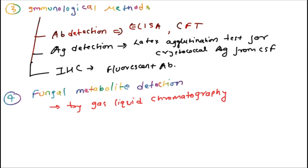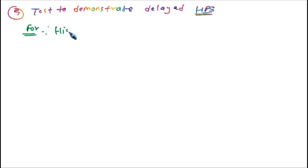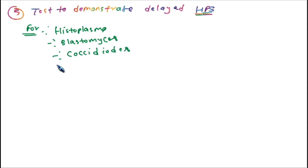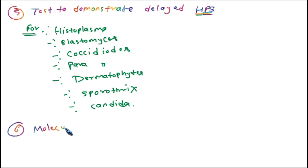The fifth immunological method is a test to demonstrate delayed hypersensitivity — used for Histoplasma, Blastomyces, Coccidioides, Paracoccidioides, dermatophytes, Sporothrix, and Candida. The sixth and final method in lab findings is molecular method — the most important being PCR, Polymerase Chain Reaction. That concludes part two of laboratory findings and staining of fungi.